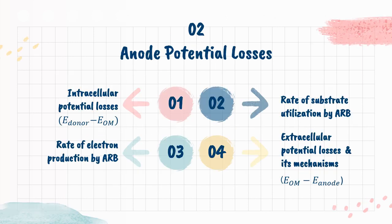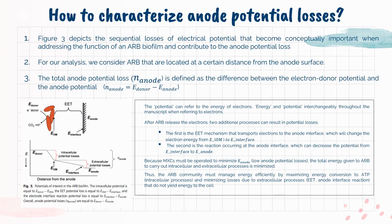The second part is the Anode Potential Losses. This section is divided into four parts: intracellular potential losses, rate of substrate utilization by ARB, rate of electron production by ARB, and the extracellular potential losses and its mechanisms. Before getting into the intracellular potential losses, let's find out how to characterize the anode potential losses first. Figure 3 depicts the sequential losses of electrical potential that become conceptually important when addressing the function of an ARB biofilm and contribute to the anode potential loss.